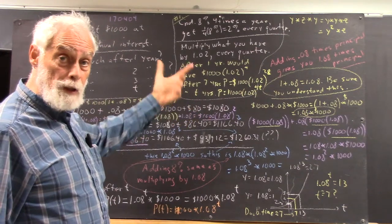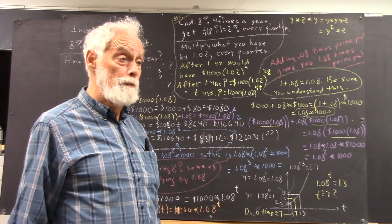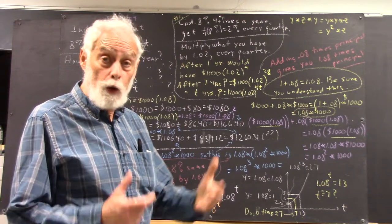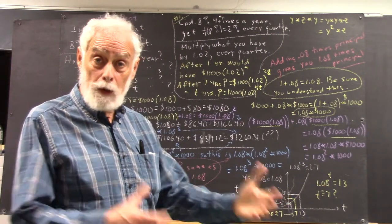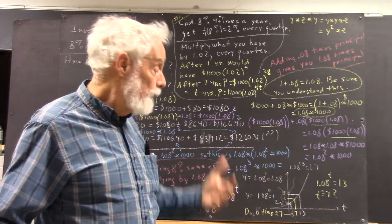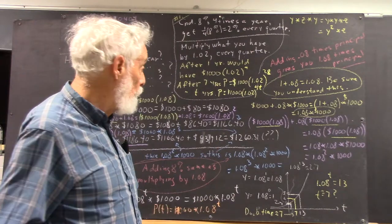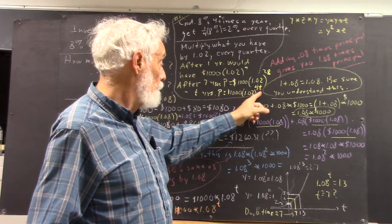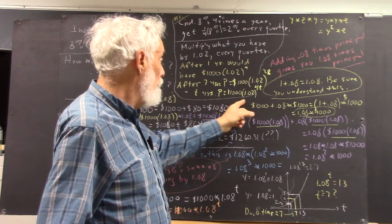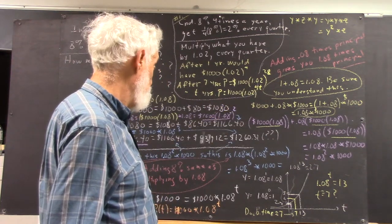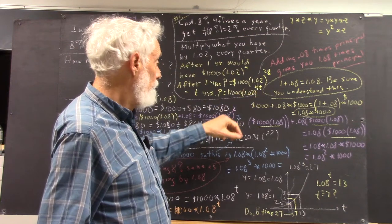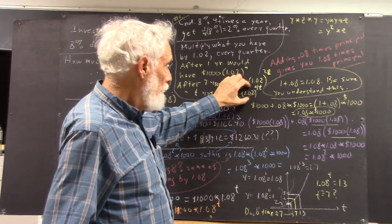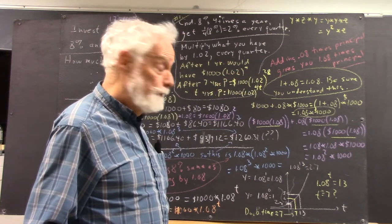Now, after t years, how many times will you then compound it? Well, four times t, right? Four times every year for t years. t is the number of years. You multiply that by four. Your exponent is going to be 4t, 1.02 raised to the 4t. And there is your principal function. Your principal as a function of t. It's some number times an exponential function.